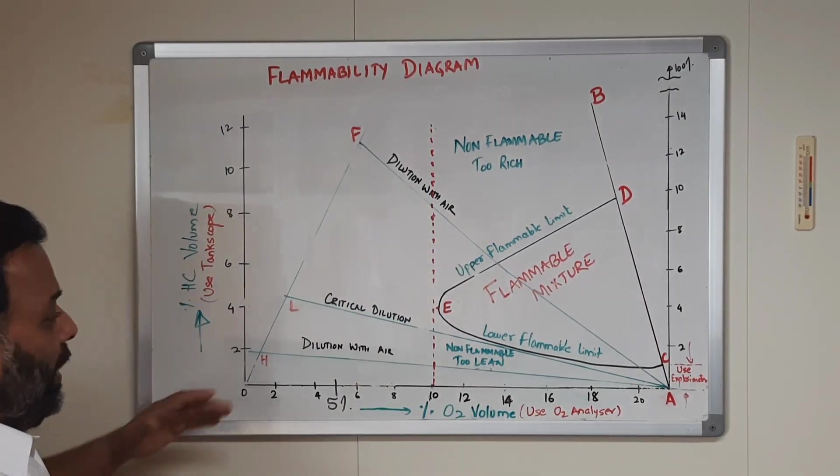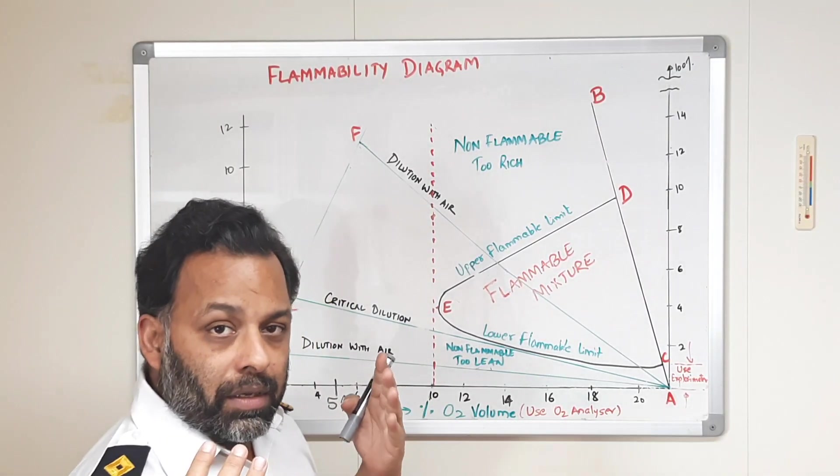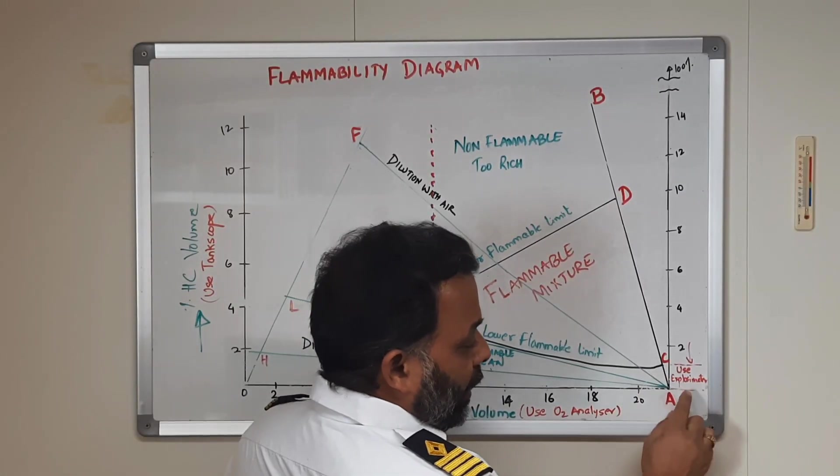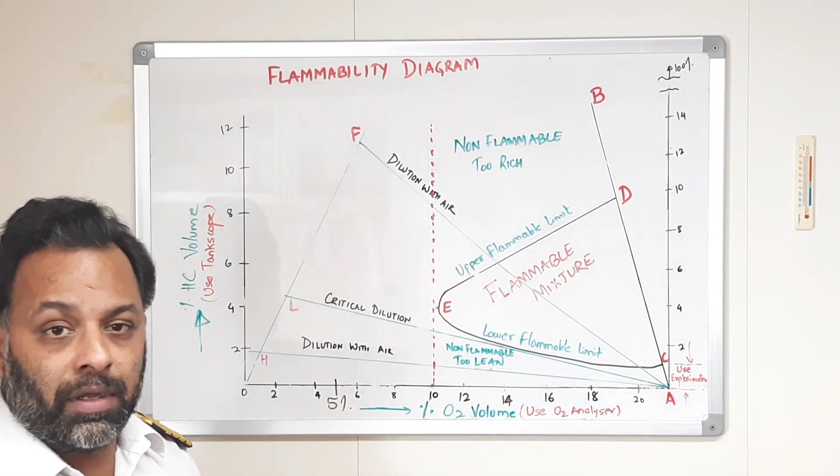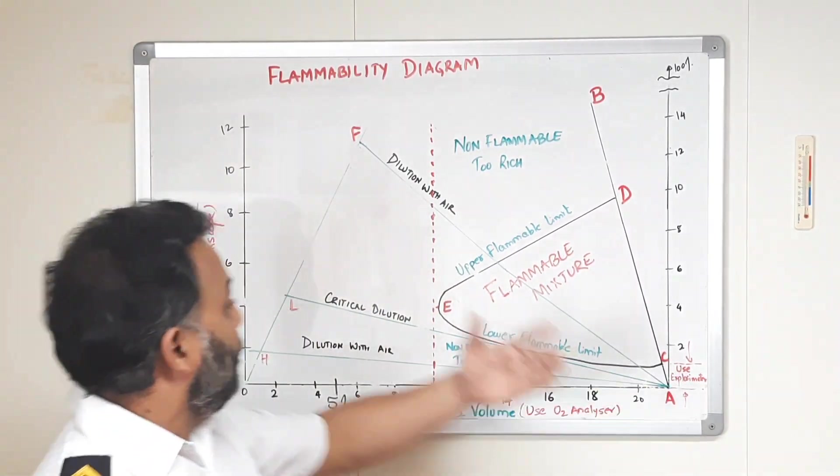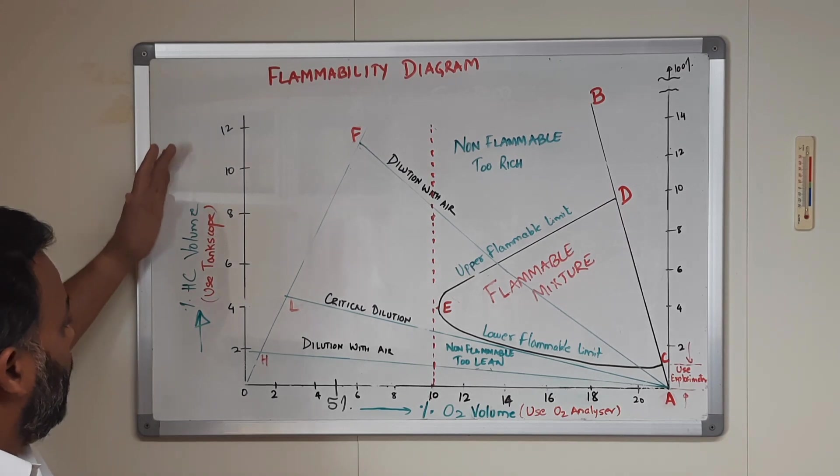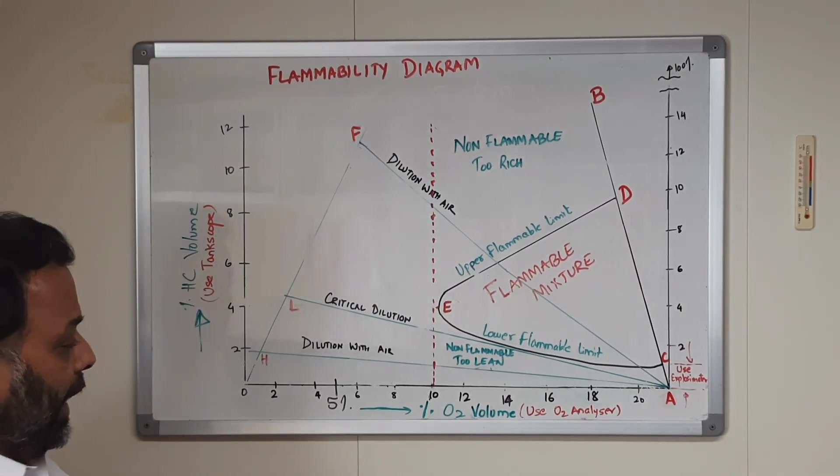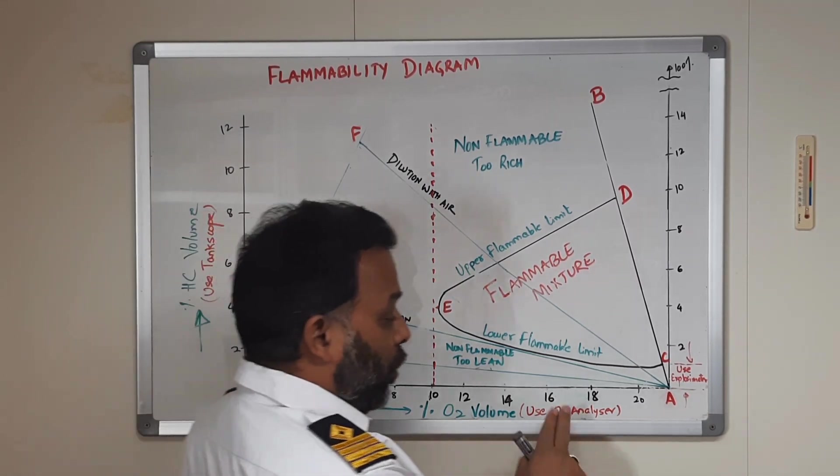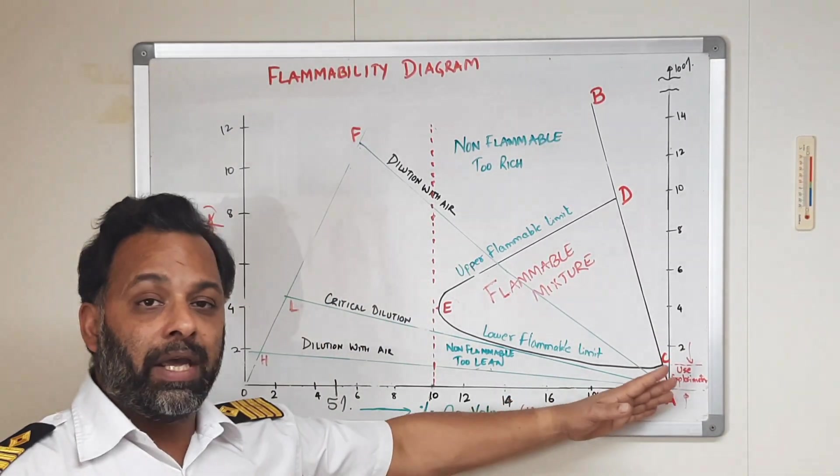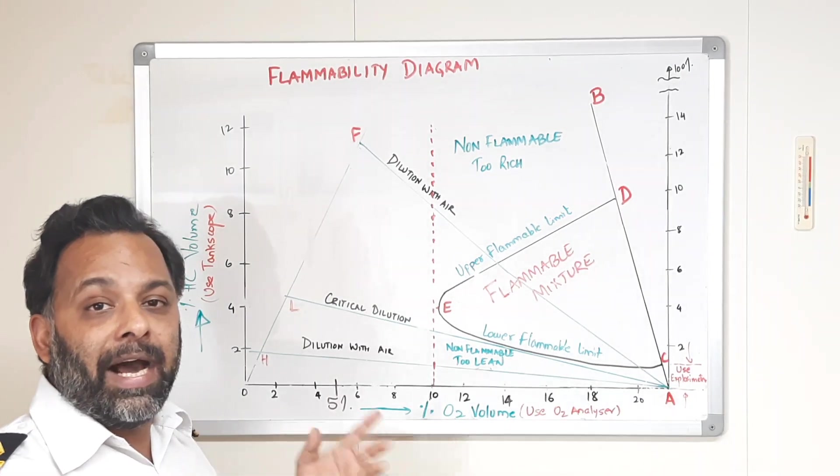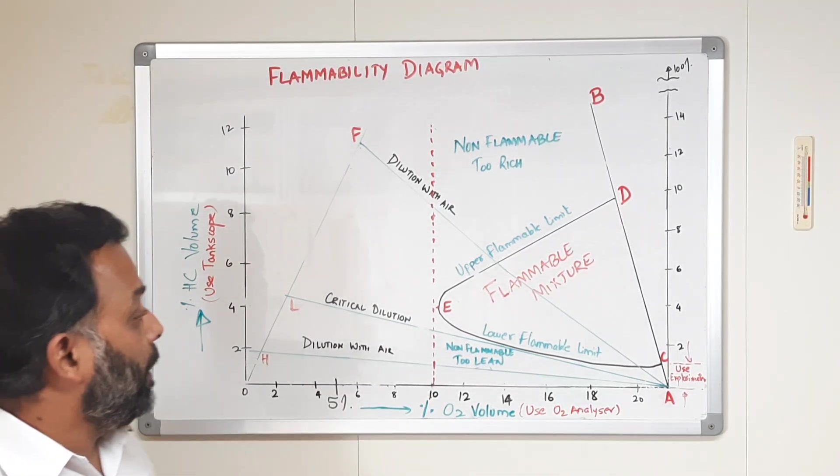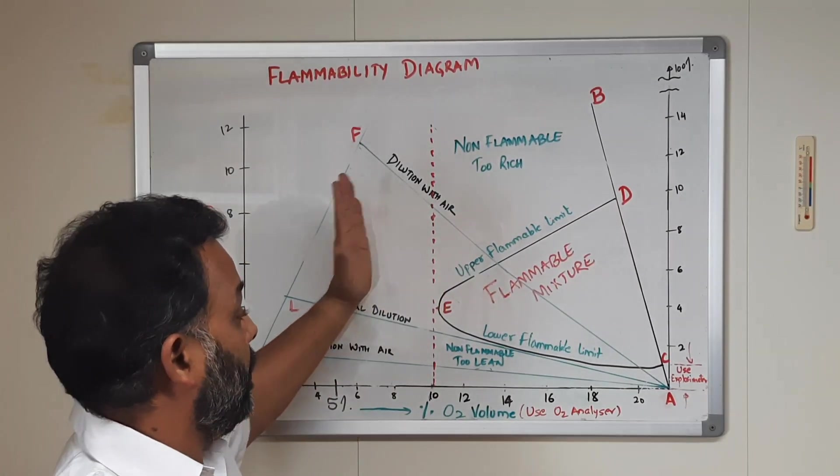One more thing, when we are measuring the tank atmosphere below the lower flammable limit, we use an equipment called explosimeter. When we are measuring percentage hydrocarbon in volume, we are using an instrument called tank scope and for oxygen, we use an O2 analyzer. All these three, the working, the principle, I have talked in another video, you can have a link below.